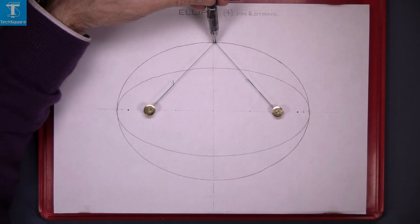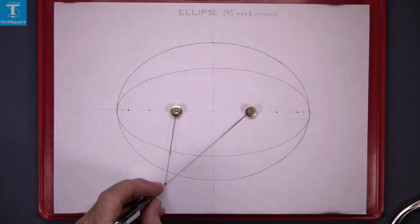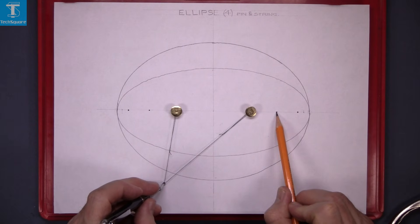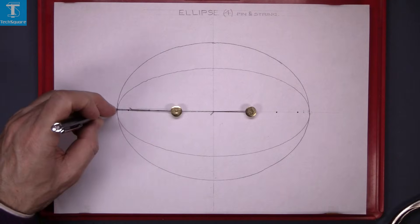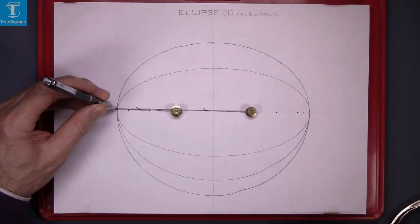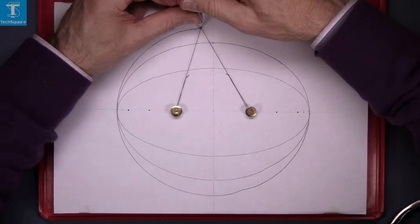Now I'm going to move the pins into the next position. There's the third ellipse now. And again, the minor axis is increasing in length as the pins get closer to the centre.